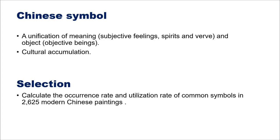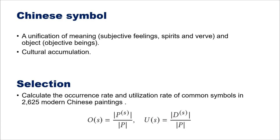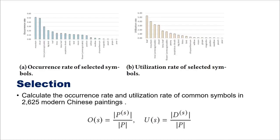In such condition, we select common symbols from 2,625 modern Chinese paintings collected manually and calculate the occurrence rate and utilization rate of them. The occurrence rate is the proportion between the number of paintings having symbol S and the total number of paintings, indicating the symbols' coverage of creation scenes. The utilization rate is calculated as the proportion of the appearance number of symbol S to the total number of paintings, showing how frequently symbol S appears in a random painting. With typical symbols of high occurrence rate and utilization rate, we can cover most creation scenes and needs. Part of our statistical results are shown in the figure. We finally selected 17 symbols to build the system.